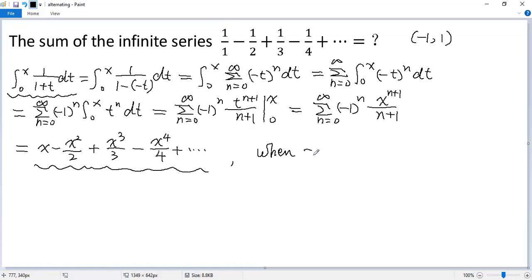When x equals 1, you see the right side becomes 1 minus 1 squared, which is 1 over 2, plus 1 cubed, again 1 over 3, minus x to the power 4, again 1 over 4. Continue this way. So it is actually the target infinite series, right?